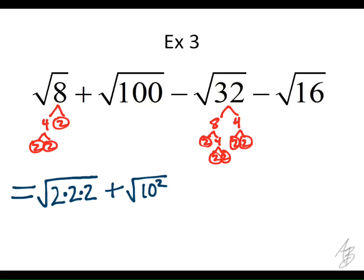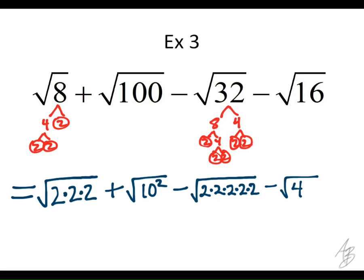You could just write a 10 in there and say the square root of 100 is 10, and move on — you don't have to show your work for that one. The square root of 32 is going to be 2 times 2 times 2 times 2 times 2 — there are 5 of them. And I need to put a minus there, not a plus. Minus the square root of 4 squared.